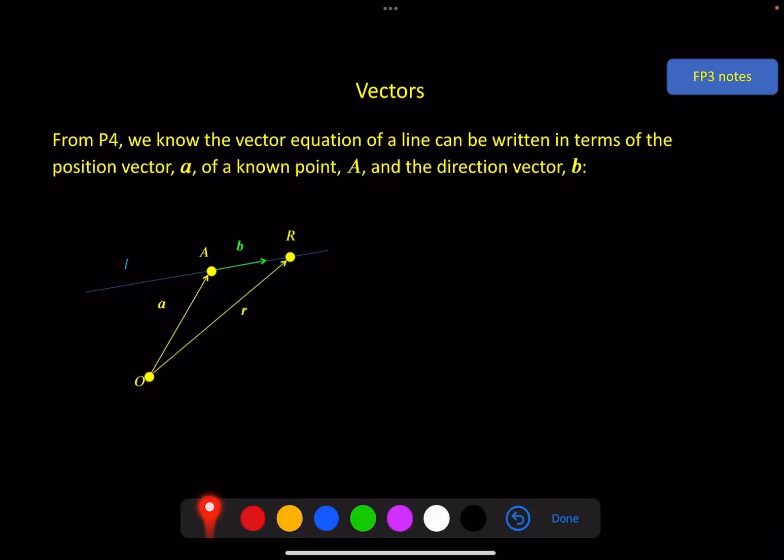So here's our line. For any point r on the line, we can get there by going from O to A and then some factor of b along this line. That sum factor is often called lambda. So this I hope is familiar to you. This is a vector equation of the line L, where r and lambda are your variables and a and b are the things to find out in order to define your line.